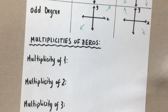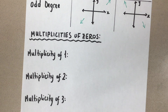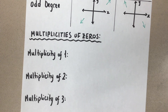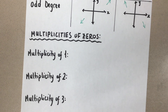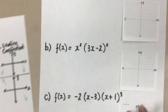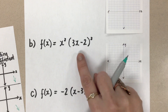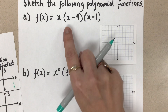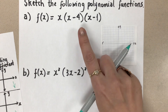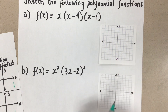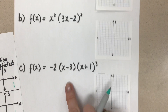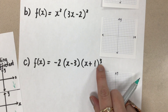Now let's talk about the multiplicity of zeros. When you have a polynomial in factored form you can pull out the zeros — the x-intercepts or roots — and plot them on your graph. The behavior at each zero is indicated by the multiplicity, which is the degree of the individual factor within the equation. For example, a factor with exponent one has multiplicity one, while a factor with exponent three has a multiplicity of three.